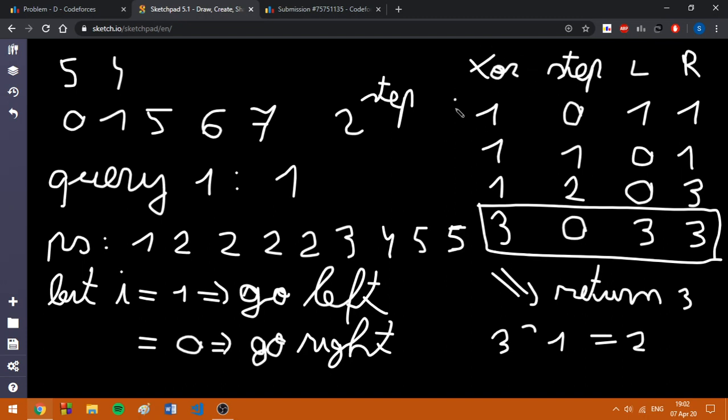At the beginning, the XOR is going to be equal to 1, which is the value of the query. Then we are at step 0, and the range is a range of length 1.